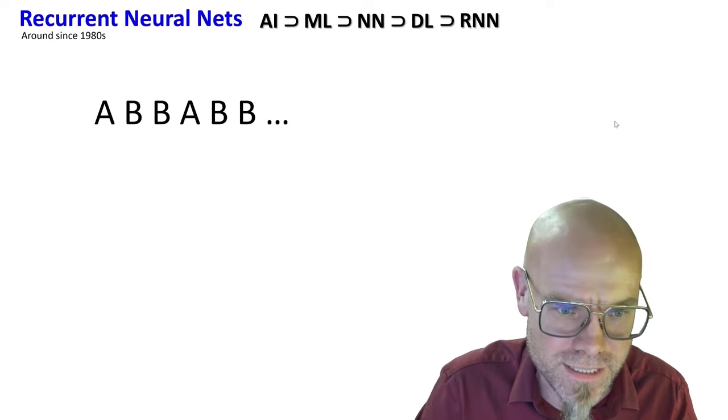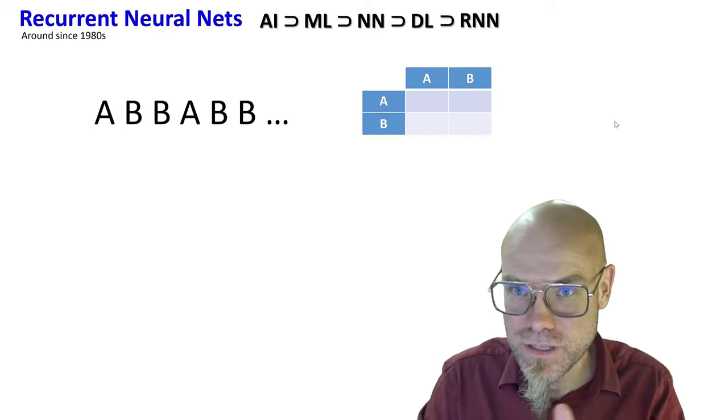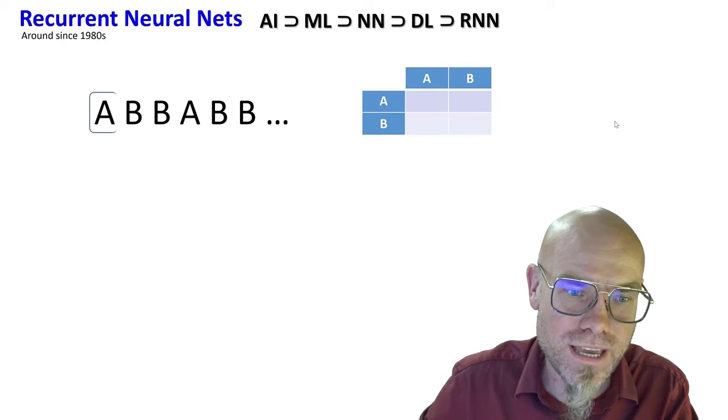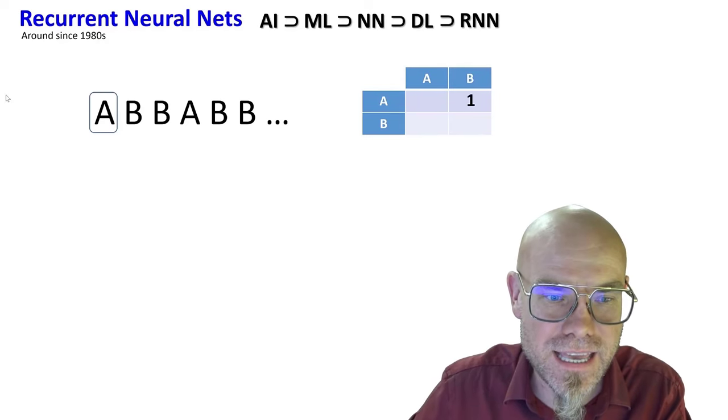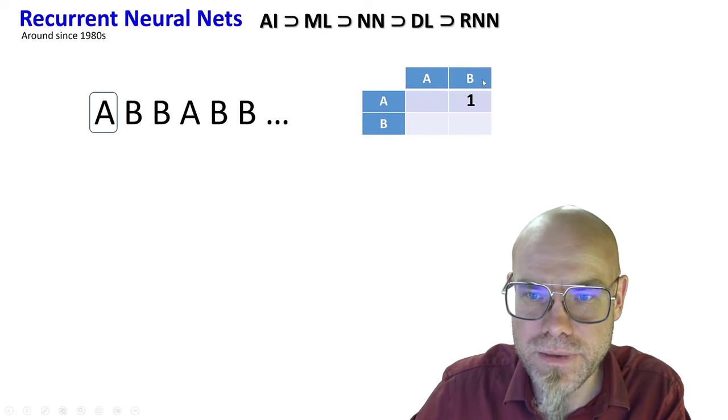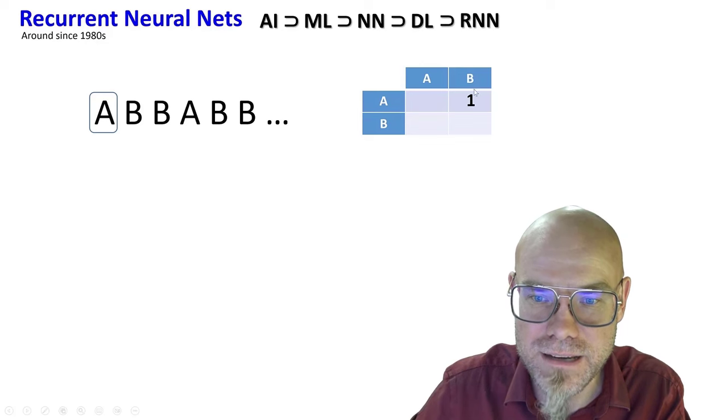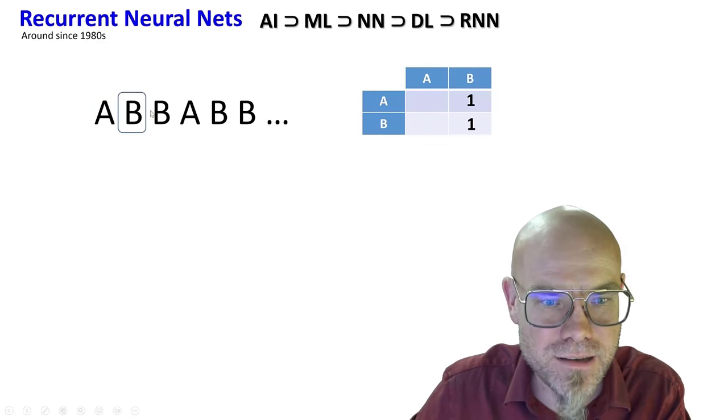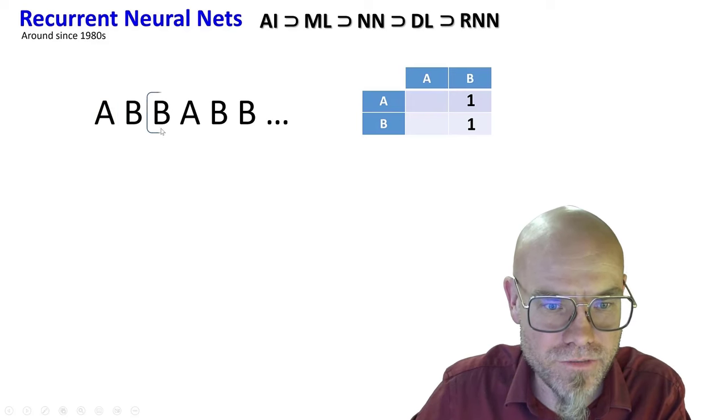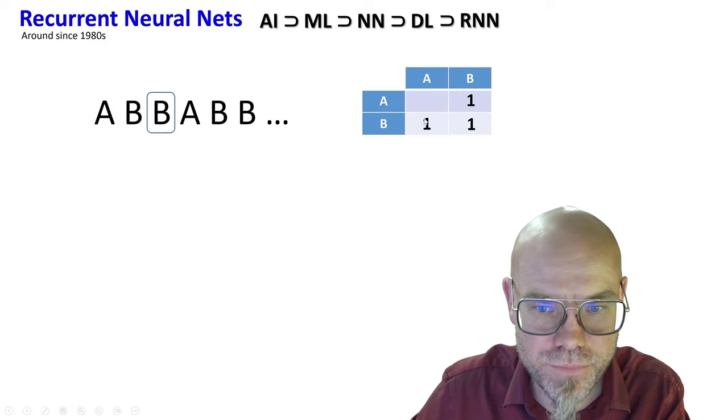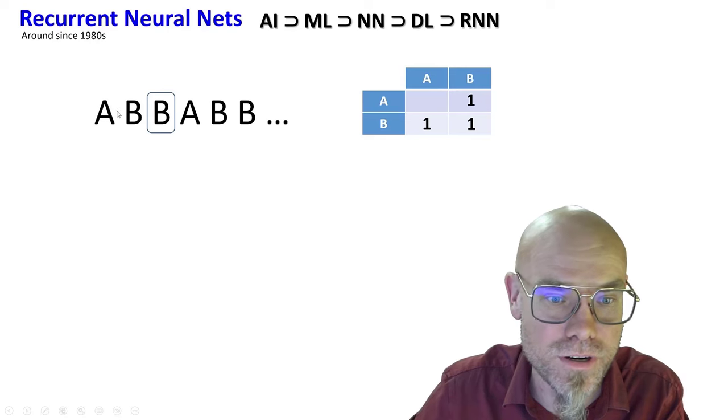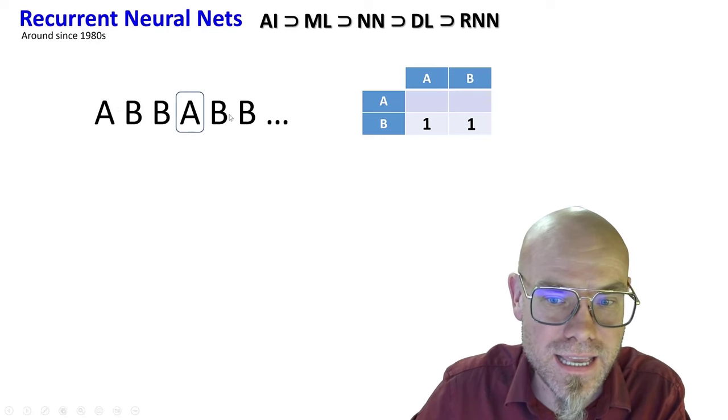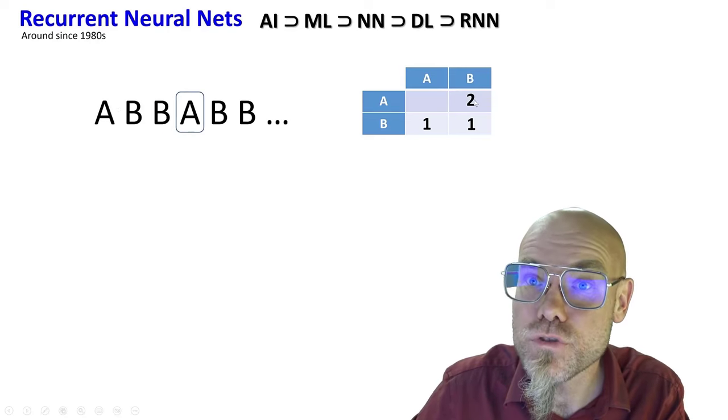Let's predict the next thing. We have our matrix, that's how we store information. We have A, and after the A comes a B. After the B comes another B, and after the B we predict another A. After that A comes another B.